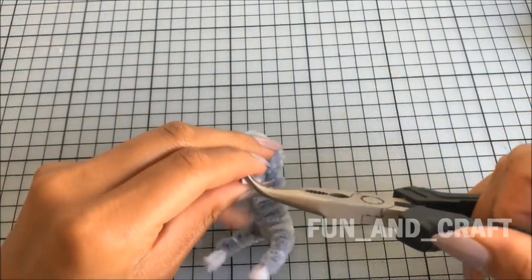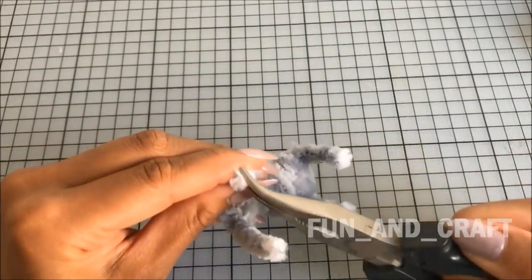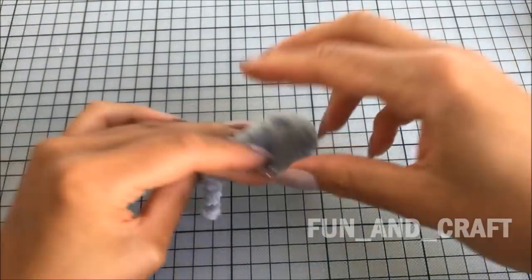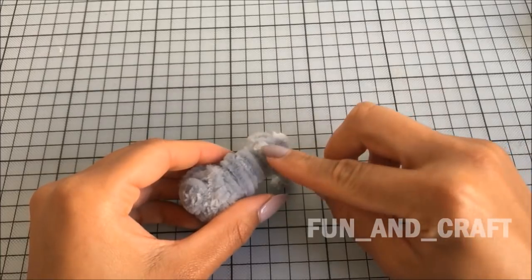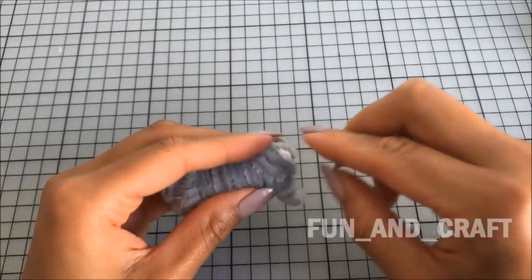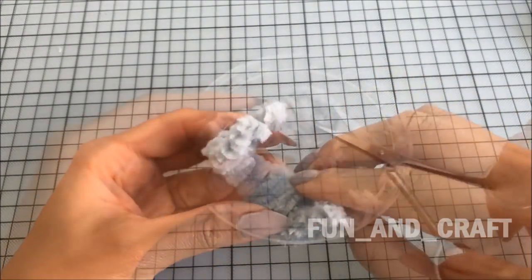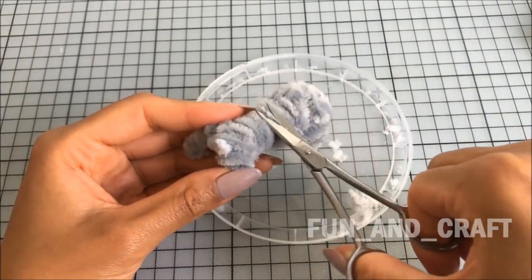Once you're done creating the body, bend the end of each leg forward to make little paws. Add a few more pieces of pipe cleaners using hot glue to fill in visible gaps, and now you can trim the fur if you like.